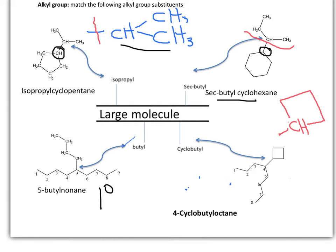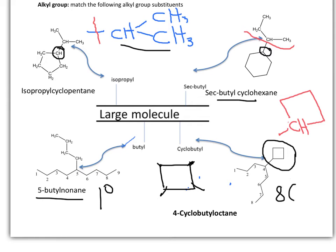It is attached on position number 5 of the molecule nonane, so this is 5-butylnonane. This is very special because we did not discuss that some cyclic alkyl groups can also be formed by removing one hydrogen — this is from the substance cyclobutane, which is CH2 at every single corner. Now we have removed one hydrogen and it is attached to a hydrocarbon chain eight carbons long, so that one is 4-cyclobutyloctane.